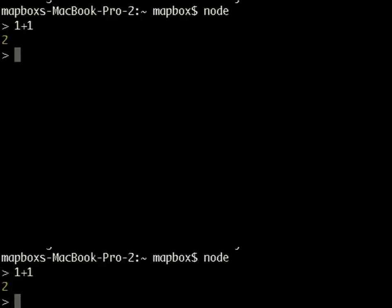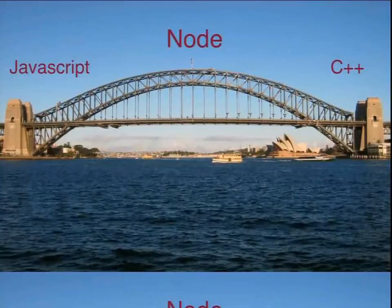An interesting thing that took me a long time to really understand is that Node — yes, it's Node.js and you're writing JavaScript, so it implements the JavaScript language — but in its foundation, it's written in C++. So there's a weird kind of dichotomy. You can think of it as a bridge: Node being the bridge between the JavaScript world and the C++ world.